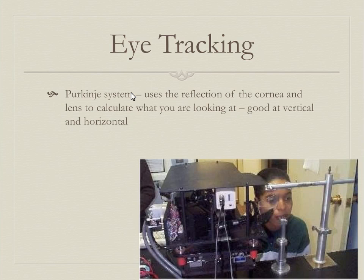The Purkinje system uses the reflection off the cornea to calculate what you're looking at. These systems are much better — very good at tracking both vertical and horizontal eye movements. Some have bite guards; most have chin rests. The newer systems, like the one Dr. Mitchell has, just require you to hold still, with a bar at the bottom of a desktop screen. However, they don't work well if you have glasses.